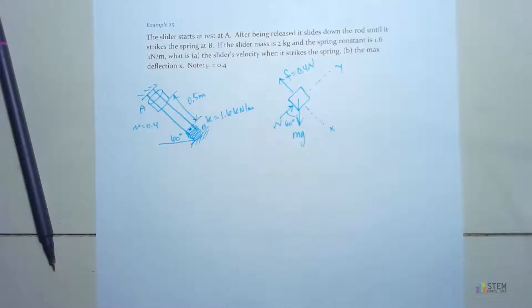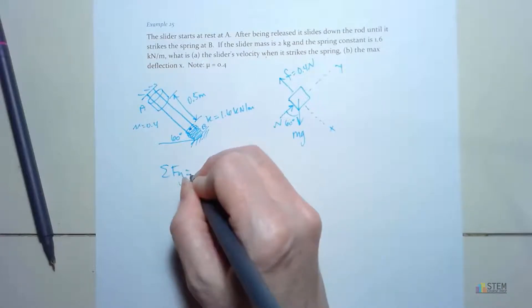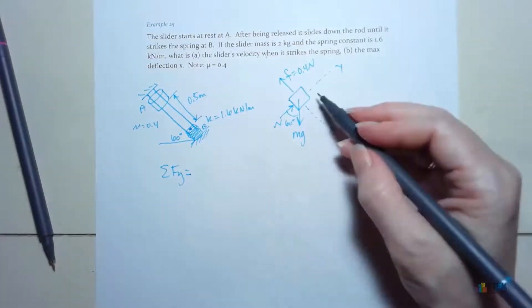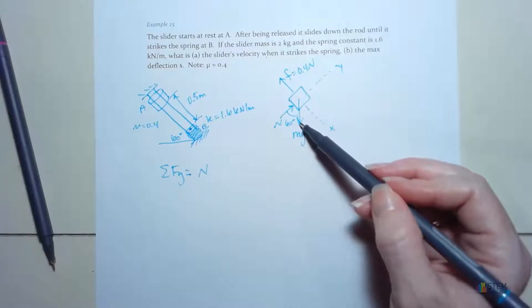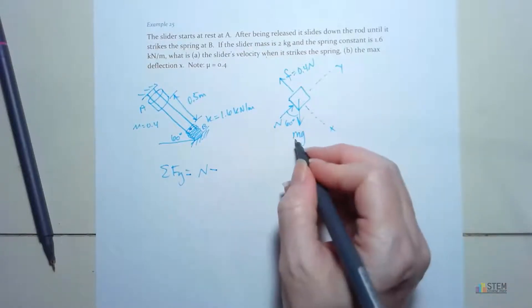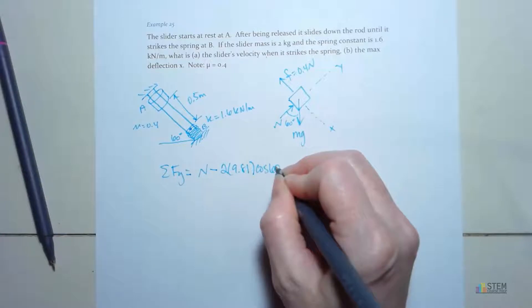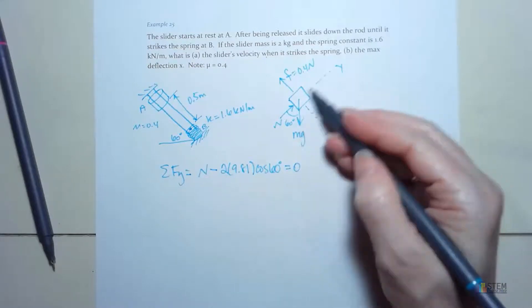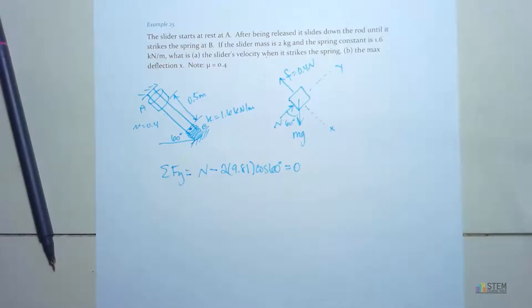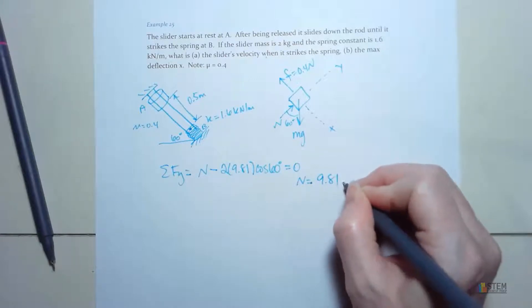Now, what we need to do is find the velocity when we hit B. So we're going to start out by looking at our Y equation. So the sum of the forces in the Y direction, this is the Y direction. I've got this normal force, it's a positive direction. And then I've got a component due to the weight, which is going to be negative. So we're going to have negative M times G, so that's 2 times 9.81, times cosine 60. And now there's no acceleration in that direction. So that's going to be 0, because we're not moving in the Y direction. Everything is in the X direction. So that equals 0. And then N, once you solve, you get 9.81 Newtons.